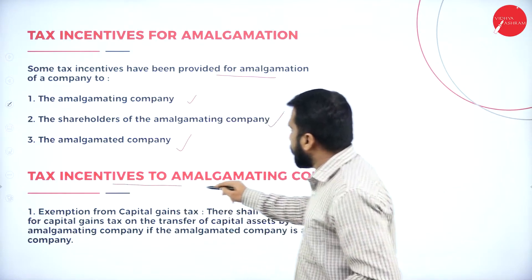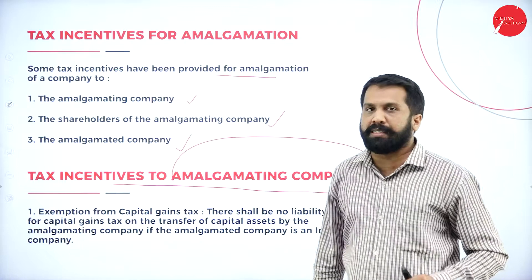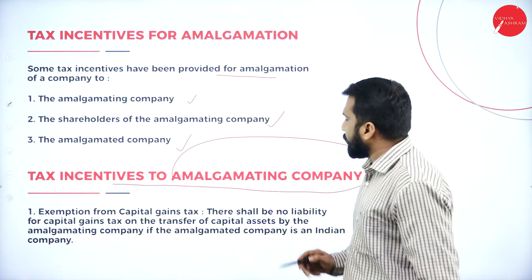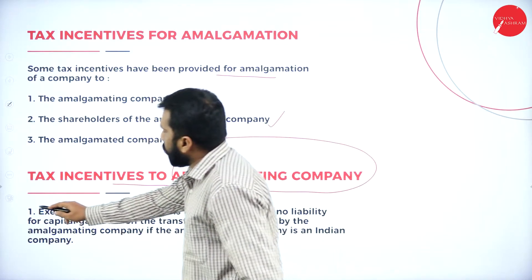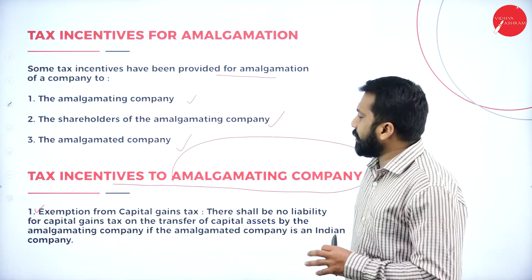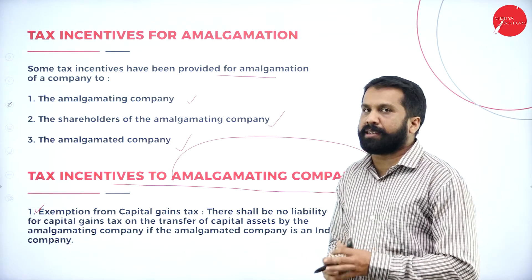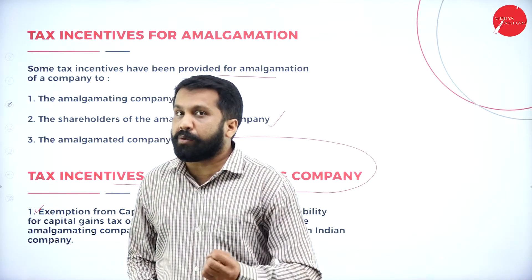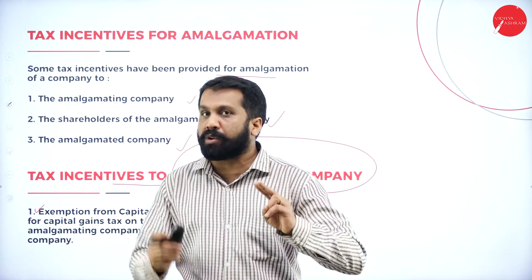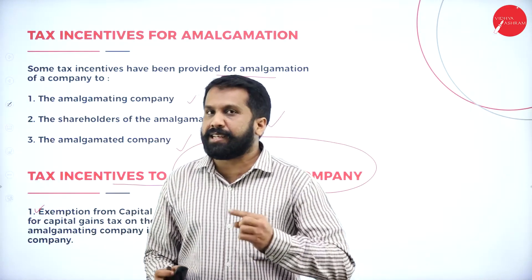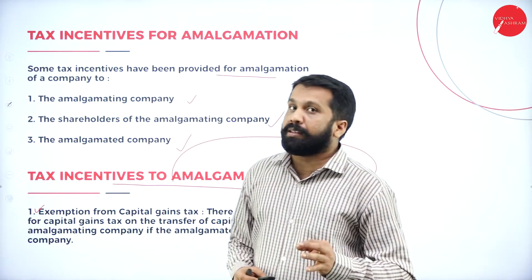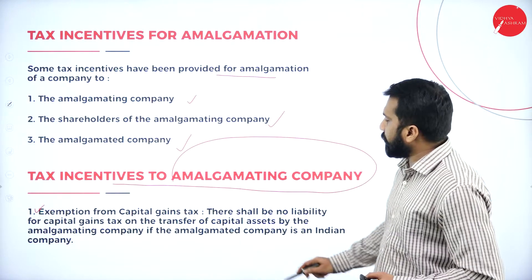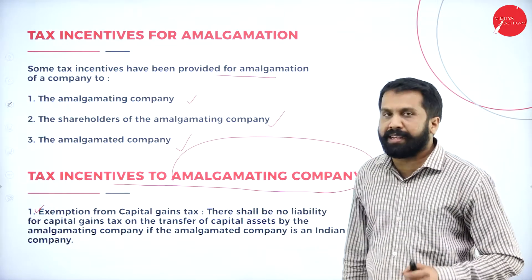Tax incentive to the amalgamating company: exemption from capital gain tax. The amalgamating company need not pay any capital gains tax. For example, if there is an asset worth one lakh rupees being sold at one lakh twenty thousand, normally that twenty thousand profit attracts capital gains tax. But in case of amalgamation, the amalgamating company need not pay any capital gain tax.